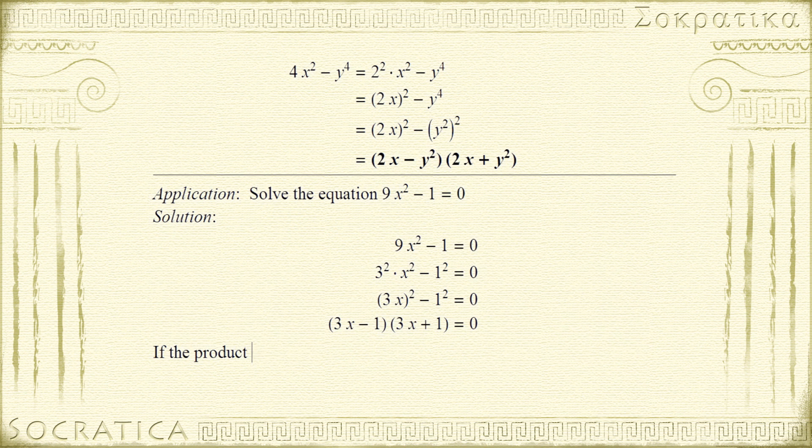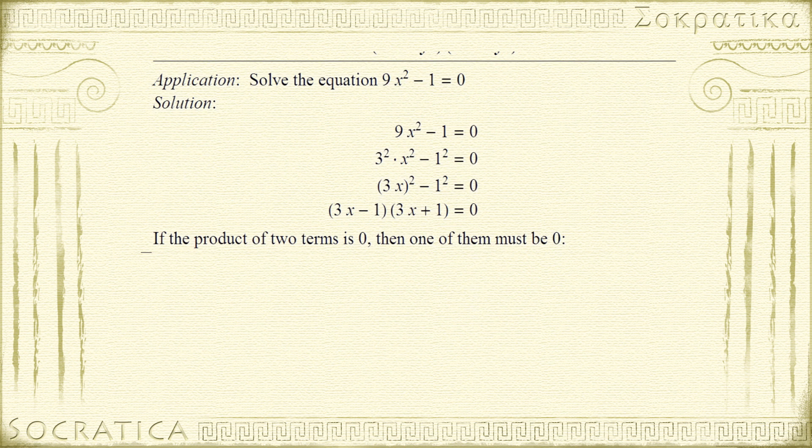Now, if the product of two numbers is 0, then one of the numbers has to be 0. So we're going to set each term equal to 0, and that will give us the solutions to this equation. Setting the first term equal to 0 gives us 3x - 1 = 0, so x = 1/3. And for the second term, 3x + 1 = 0 gives us x = -1/3. So the two solutions to this equation are 1/3 and -1/3.